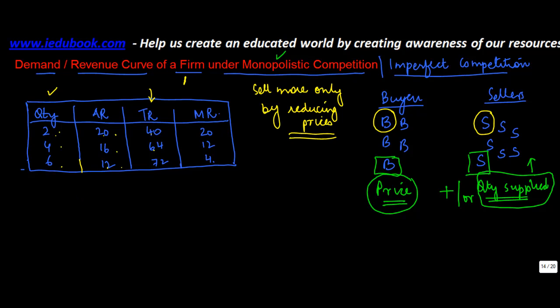Marginal revenue, represented by change in total revenue upon change in quantity, is calculated as follows. For example, for the first one, change in total revenue is 40 minus 0, upon change in quantity, 2 minus 0. So 40 divided by 2 equals 20.